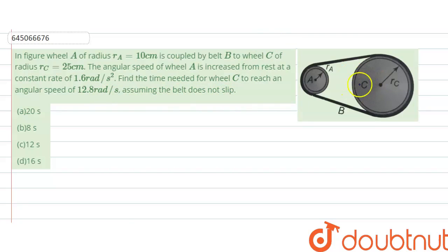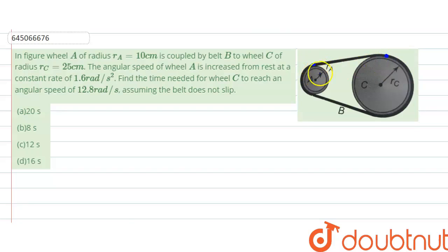Initially the system is at rest. The angular speed of A is increasing at a rate of 1.6 radians per second squared — that is the angular acceleration for A. Since there is no slipping, the tangential acceleration must be the same for both wheels A and C, because the points on each wheel connected to the belt must have equal acceleration along the belt direction.